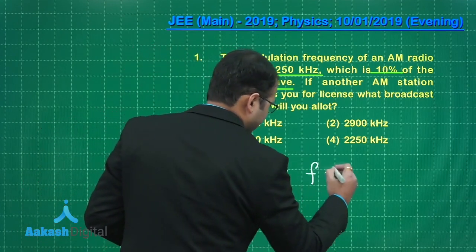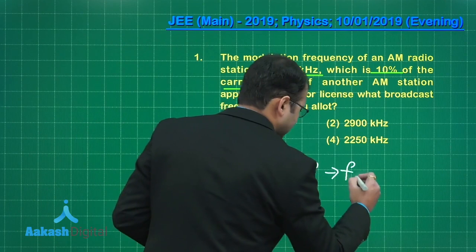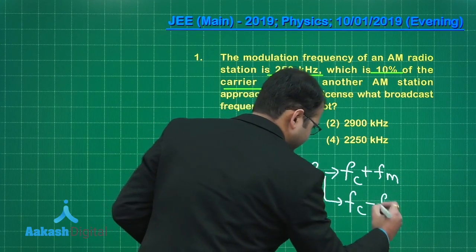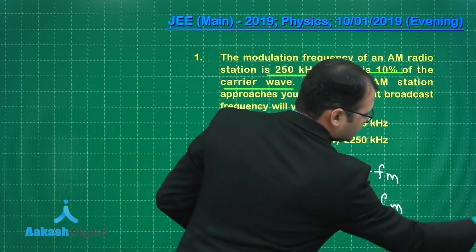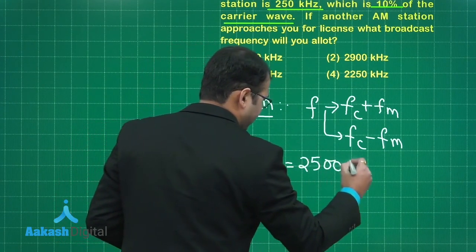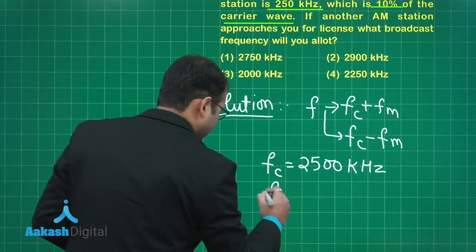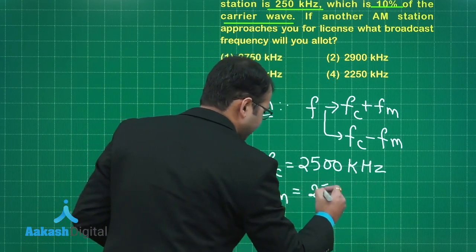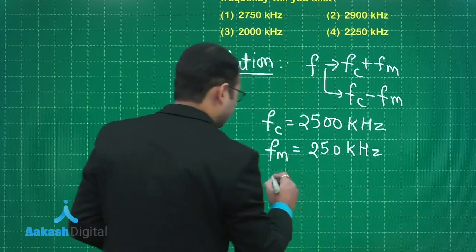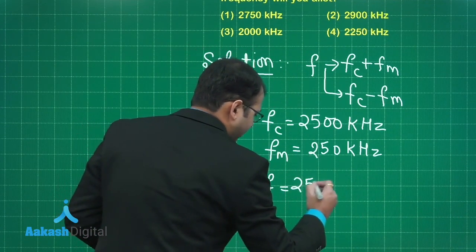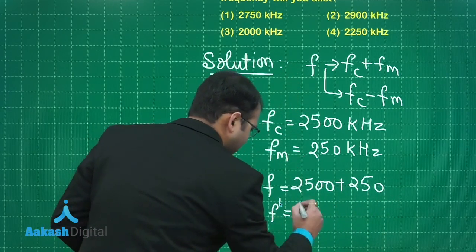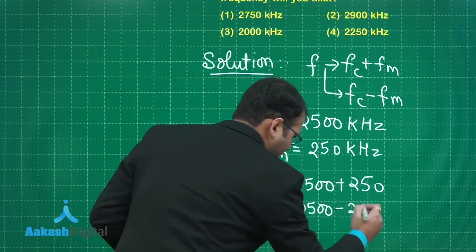As you are well aware, for frequency of such cases, we have two frequencies allotted. In this case, if carrier frequency is 2500 kilohertz and signal frequency or modulation frequency is 250 kilohertz, calculate the frequencies available. So frequency would be 2500 plus 250 or F dash would be 2500 minus 250.